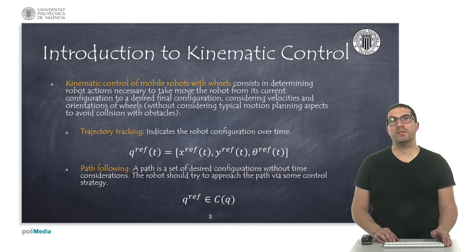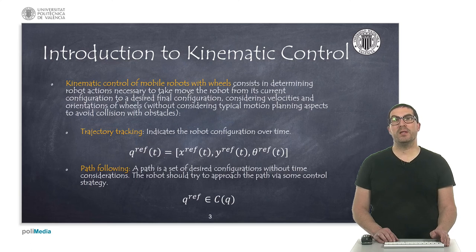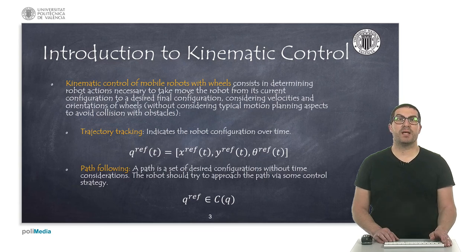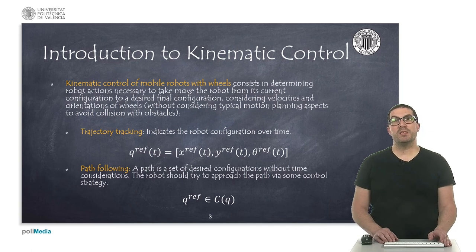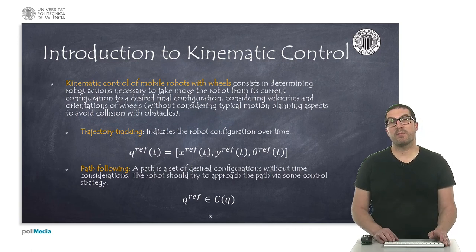In the case of trajectories, the objective is to define a set of target configurations over time. While in path following, the path is defined as a set of desired configurations regardless of time, and the objective is to define a strategy so the robot converges to the path. In this presentation, I will focus on trajectory tracking problems.